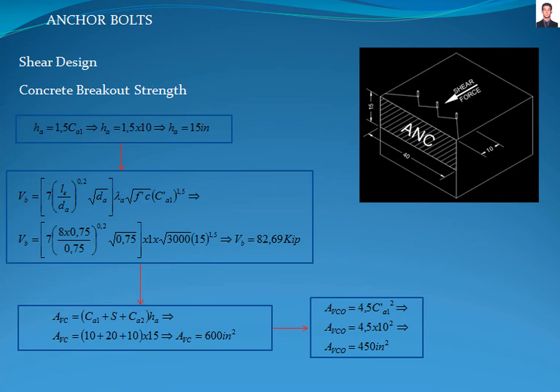The shear design is based on verification of the concrete breakout of anchors in shear and the concrete pry-out strength. First, we calculate the thickness of the member in which the anchor is located, hA, giving a result of 15 inches. We then calculate the basic single anchor breakout strength VB with equation 17.7.2.2.1a of the ACI 318 standard, where dA is the diameter of the bolt and le is the load-bearing length of the anchor, which in this case is equal to 8 times dA, giving a result of 82.69 kilopounds.